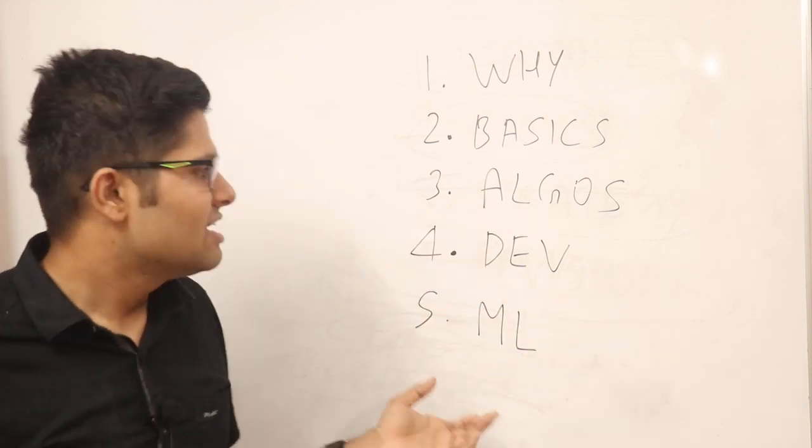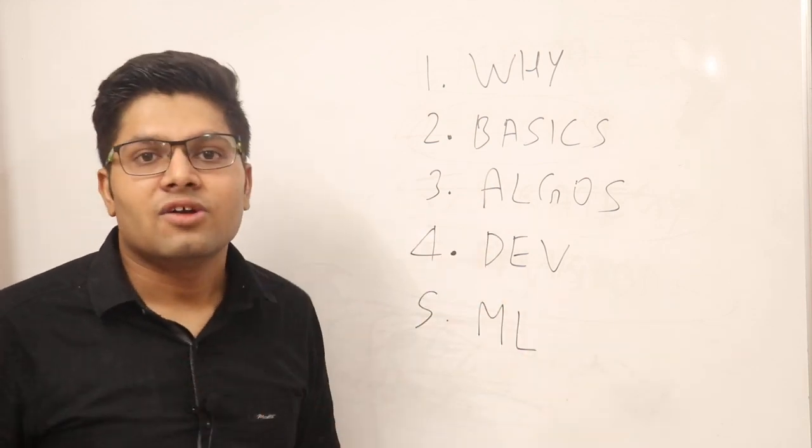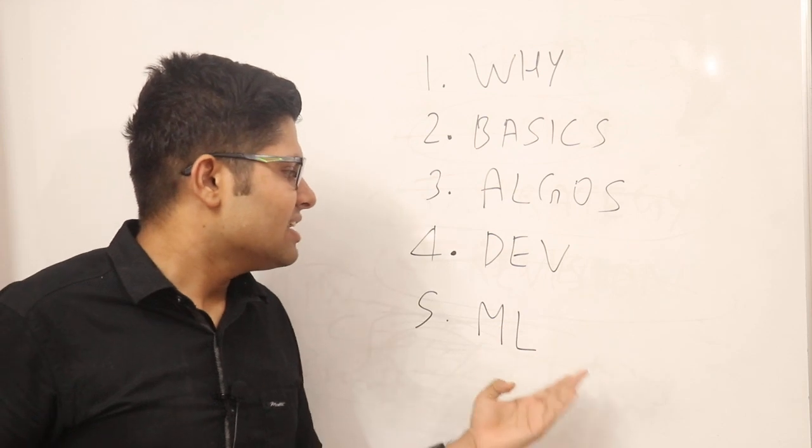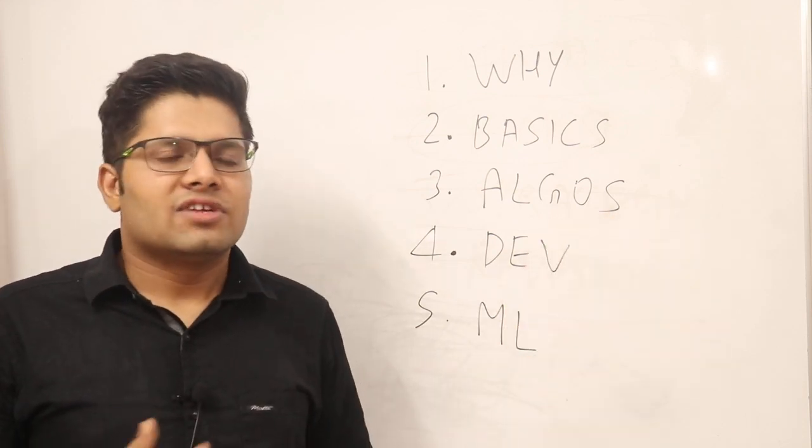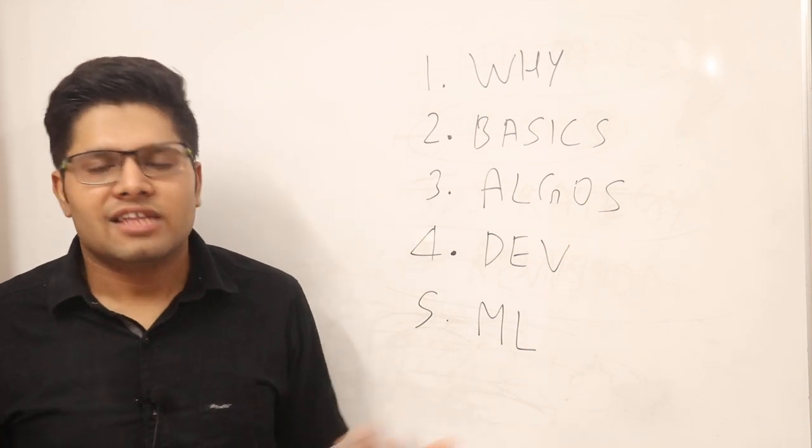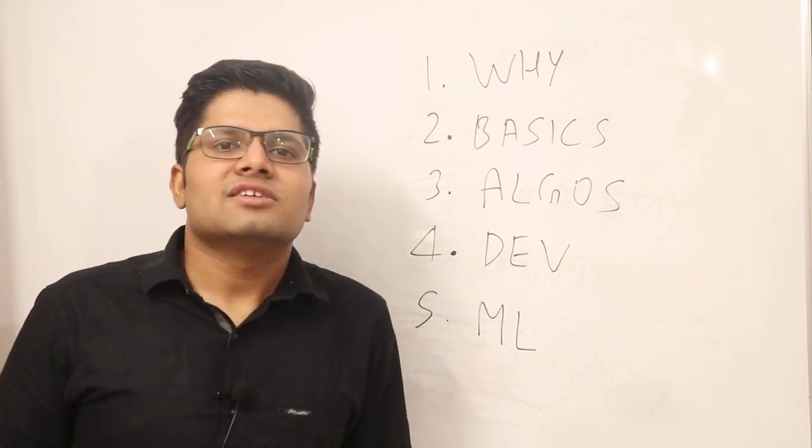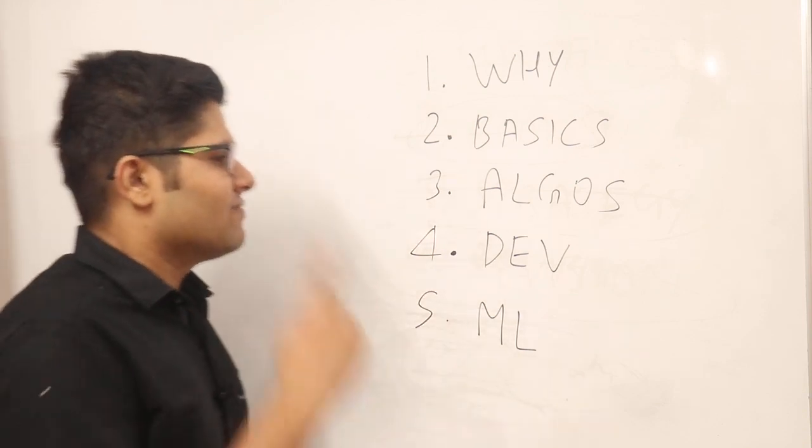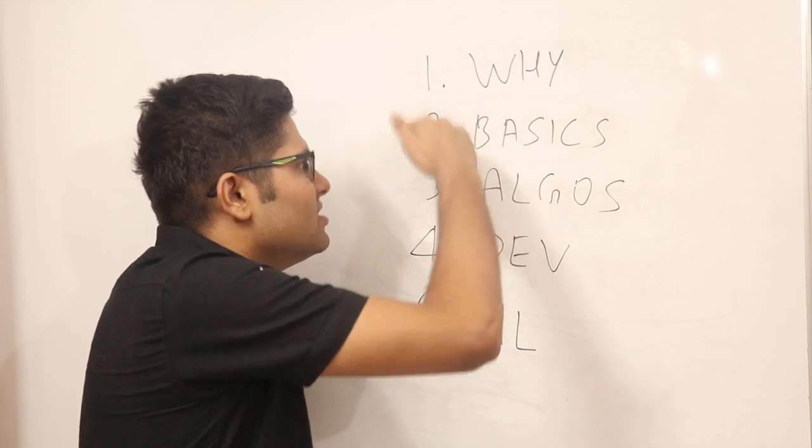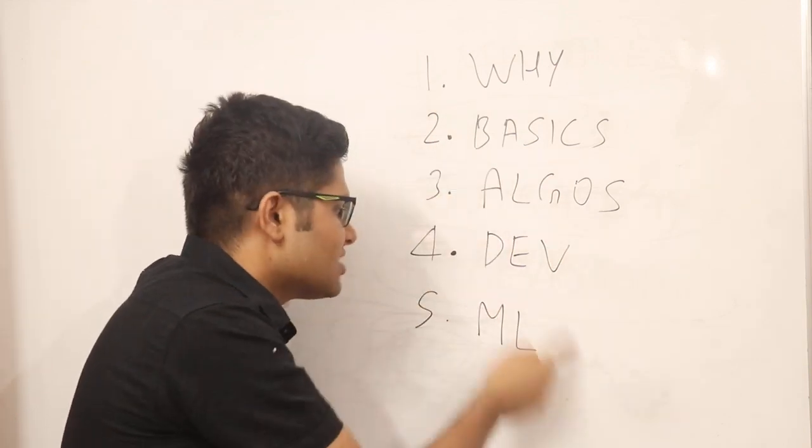Then in the final year—or it doesn't necessarily apply to college students, you can do it in any sequence—once you have sufficient knowledge, in the final year or whenever you've done all this, you can try exploring a bit of machine learning. You can try AI, machine learning. There are a lot of things you can try out—face recognition technologies, computer vision, and all that stuff.